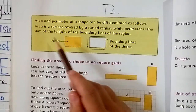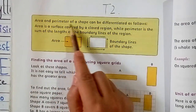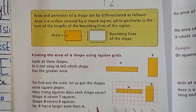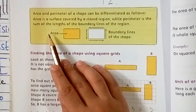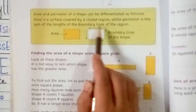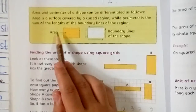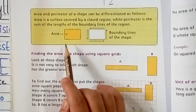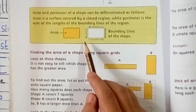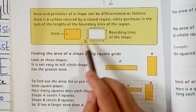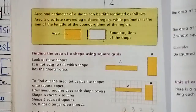Now let's read this block: area and perimeter of a shape can be differentiated as follows. What is the difference between area and perimeter? Area is the surface covered by a closed region, while perimeter is the sum of lengths of the boundary lines of the region. Area tells us how much surface the closed region has covered — how much space it occupies. Perimeter tells us the sum of the lengths of the boundary lines of the shape.